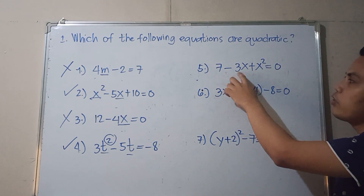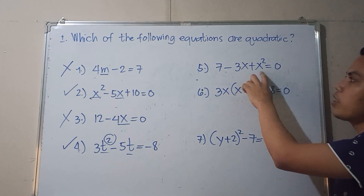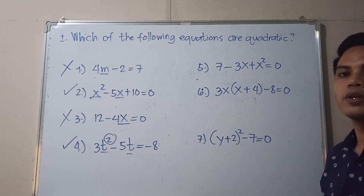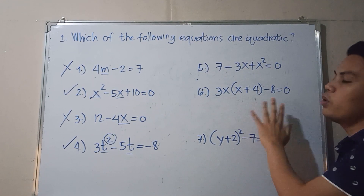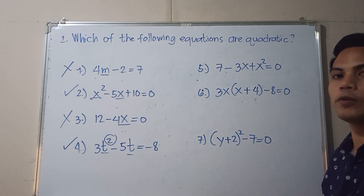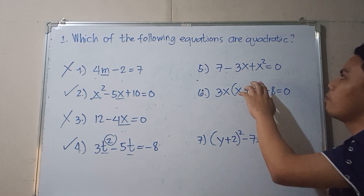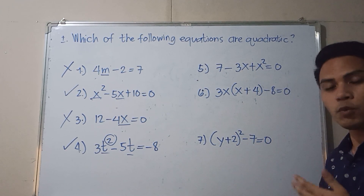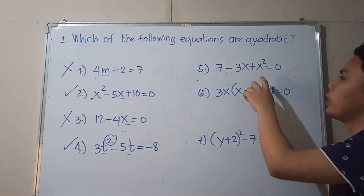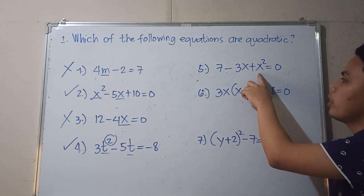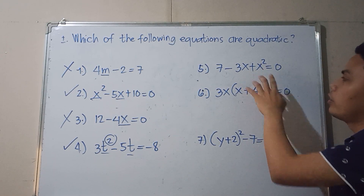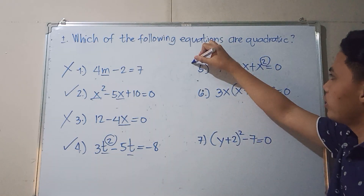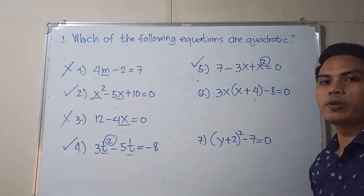Number 5: 7 minus 3x plus x squared is equal to 0. Although it is not written in standard form, that is okay — we just look at the variable. We make sure the variable has an exponent of 2. So number 5 is a quadratic equation.